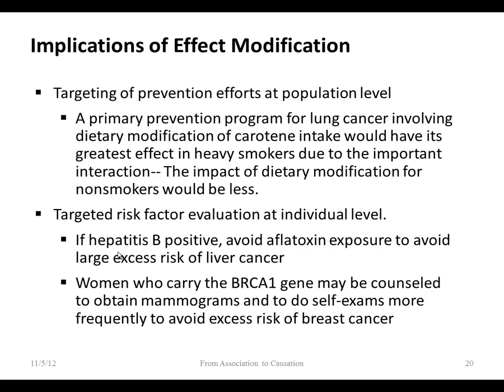Implications of effect modification for prevention: your targeting of prevention efforts at a population level will be very different if informed by effect modifiers. For lung cancer and dietary carotene, we'd target that prevention program at heavy smokers. And a smoking cessation program will have a bigger effect among folks not getting enough carotene. The impact of dietary modification for non-smokers is less — we get bigger bang for the buck going after heavy smokers to change their carotene intake.